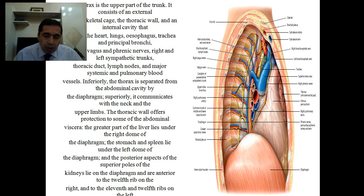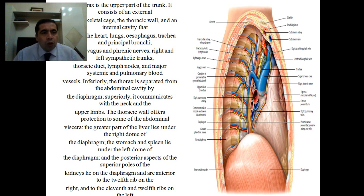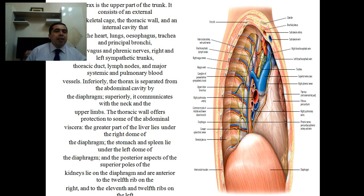The chest, commonly known as the chest or the thorax, consists of the bone framework of the pectoral region. The thorax is the upper part of the trunk. It consists of an external musculoskeletal cage — the thoracic wall — and contains some cartilaginous elements as well.